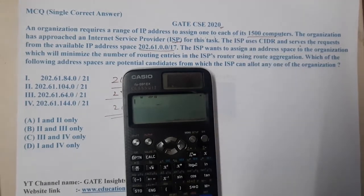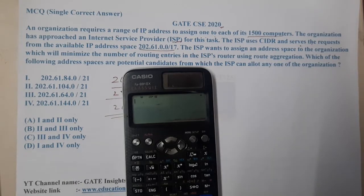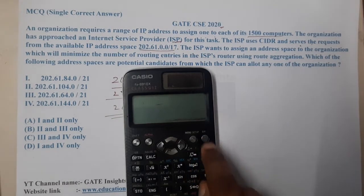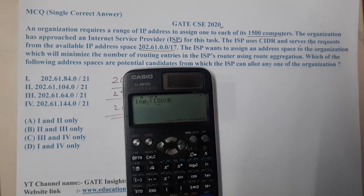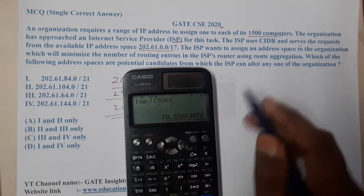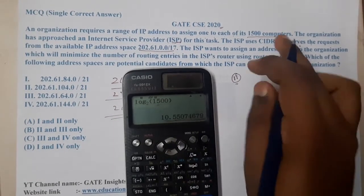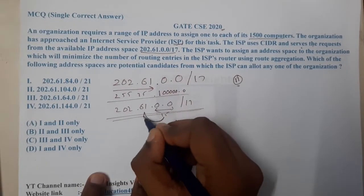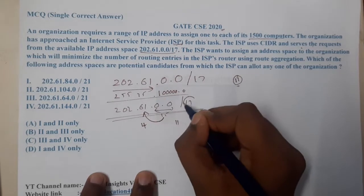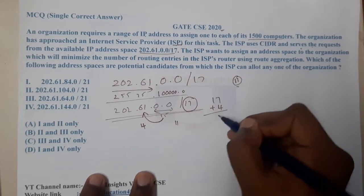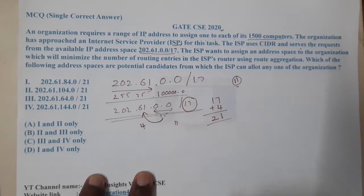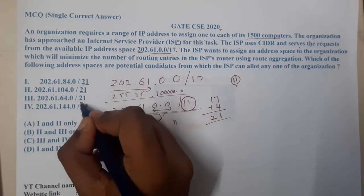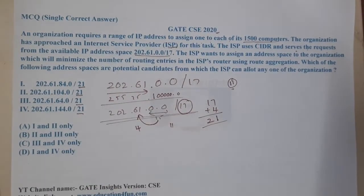To accommodate 1500 devices, how many host bits do we need? We calculate log base 2 of 1500, which is approximately 10-point-something, so we need 11 bits for the host part. If we need 11 host bits, we can transfer 4 bits to the network side: 32 minus 11 = 21. So the network mask becomes /21 — that's why all options have /21 as the network mask.